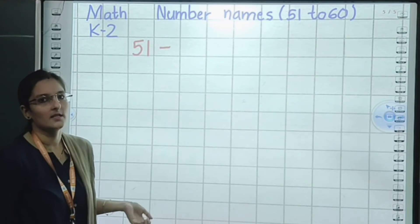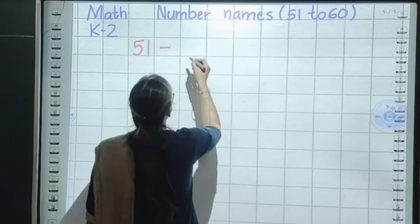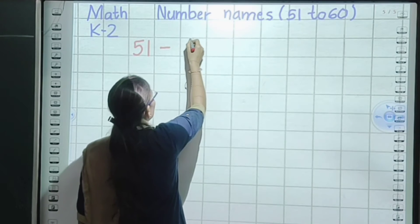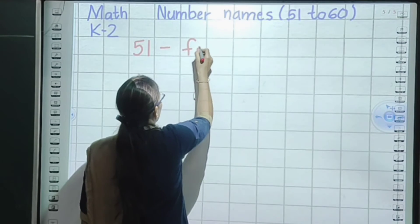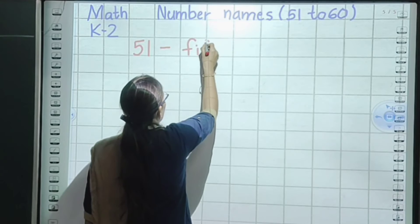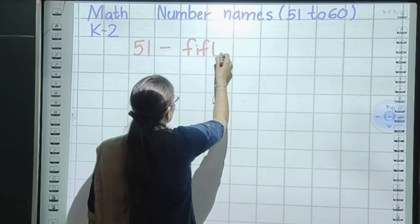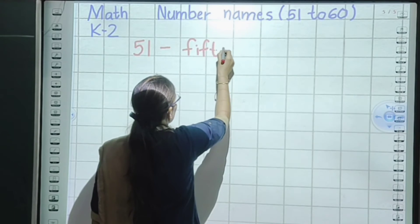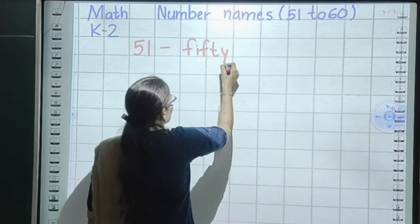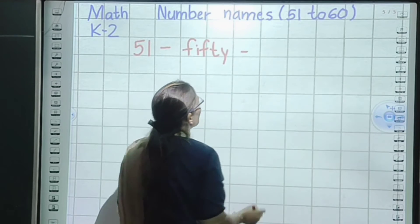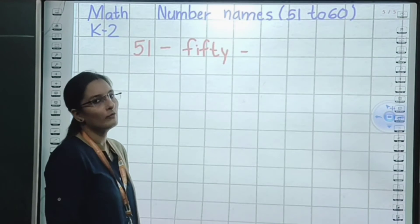See here, kids. First of all, write the number 51. Always in math, write on the bottom line. And one more thing: in number names, all the letters should be small.